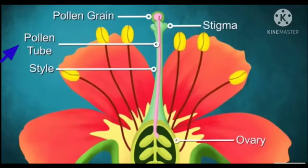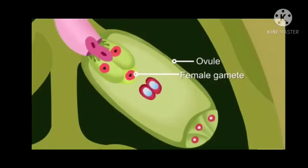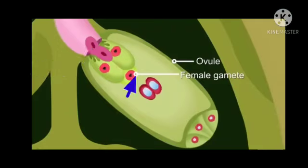The pollen tube grows downwards into the style. The pollen tube carries the male gamete through the style into the ovary. The male gamete then enters into an ovule which contains the female gamete or egg.